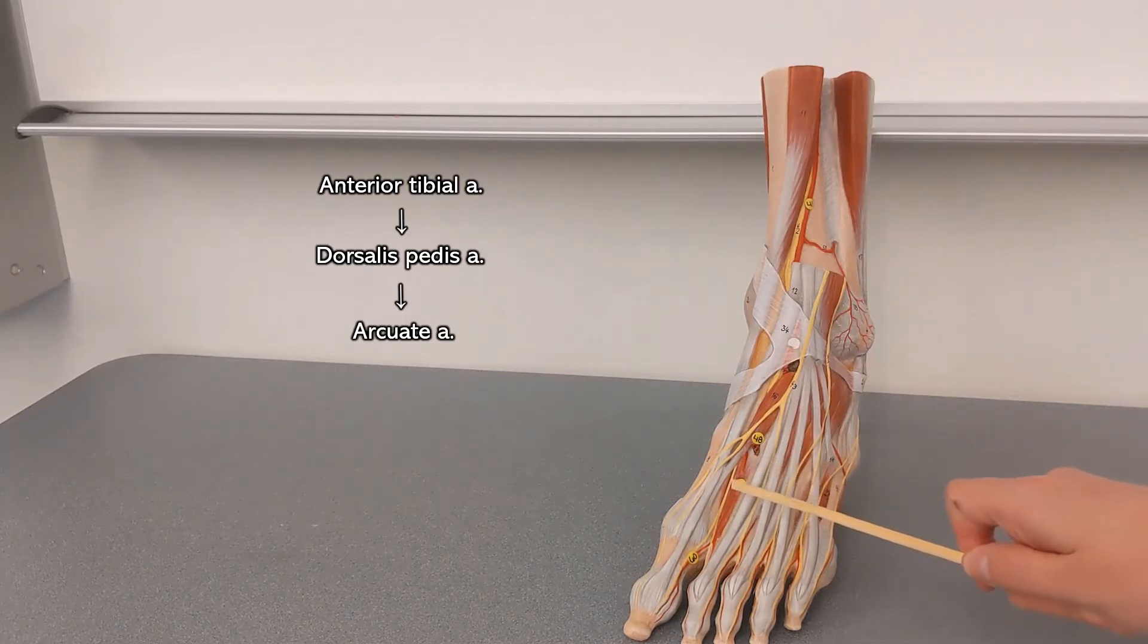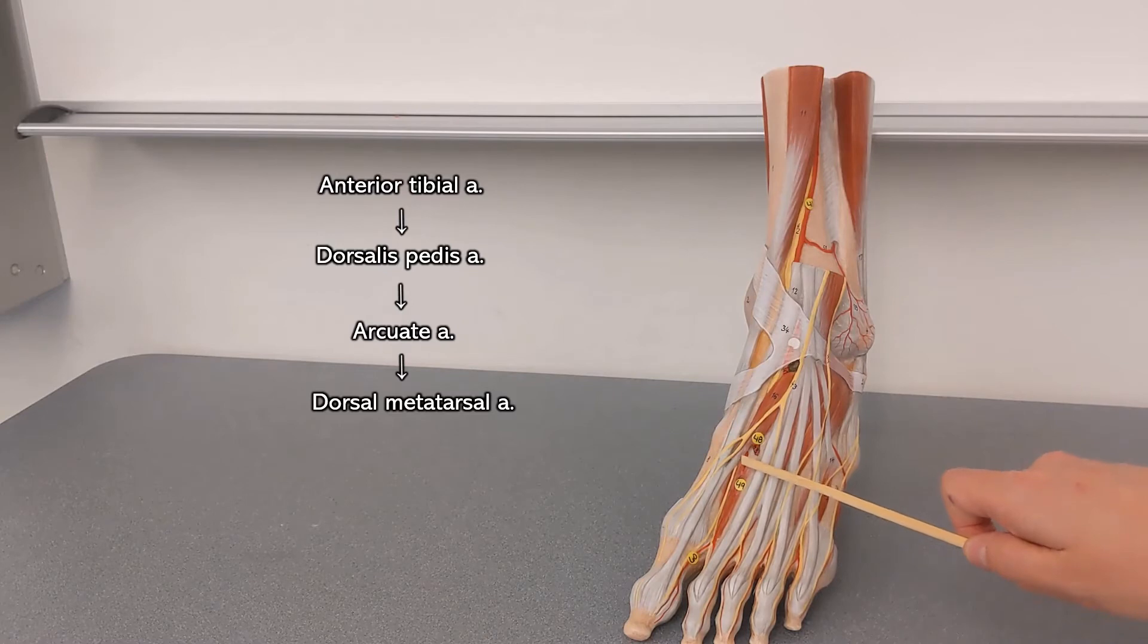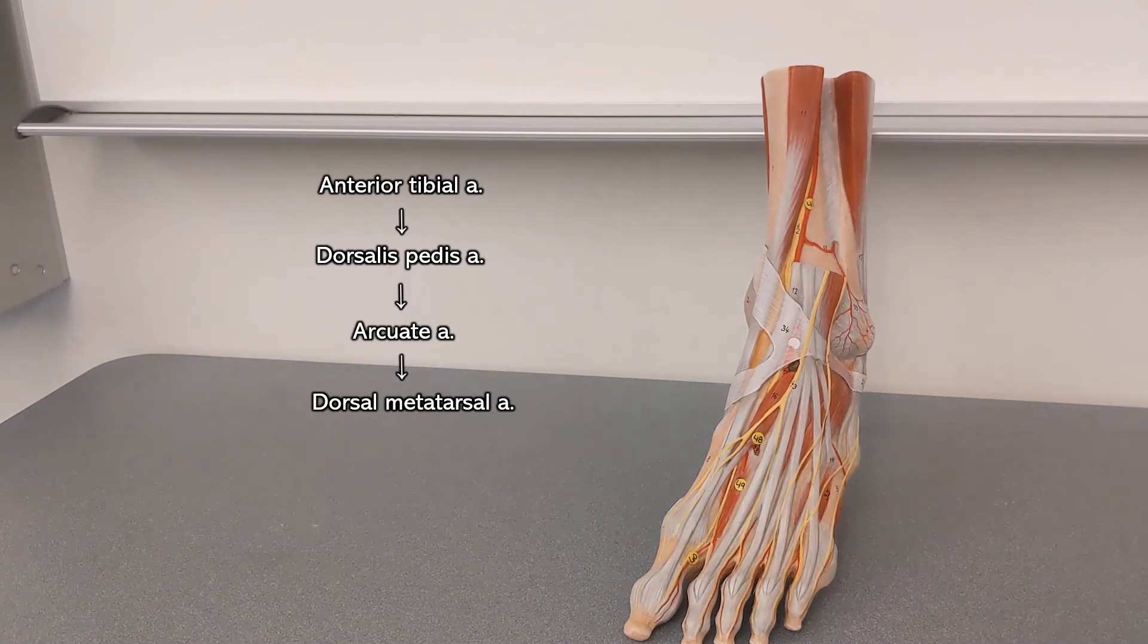Each branch coming off the arcuate artery is a dorsal metatarsal artery. The dorsal metatarsal arteries split and go to the toes and then they are called the dorsal digital arteries.